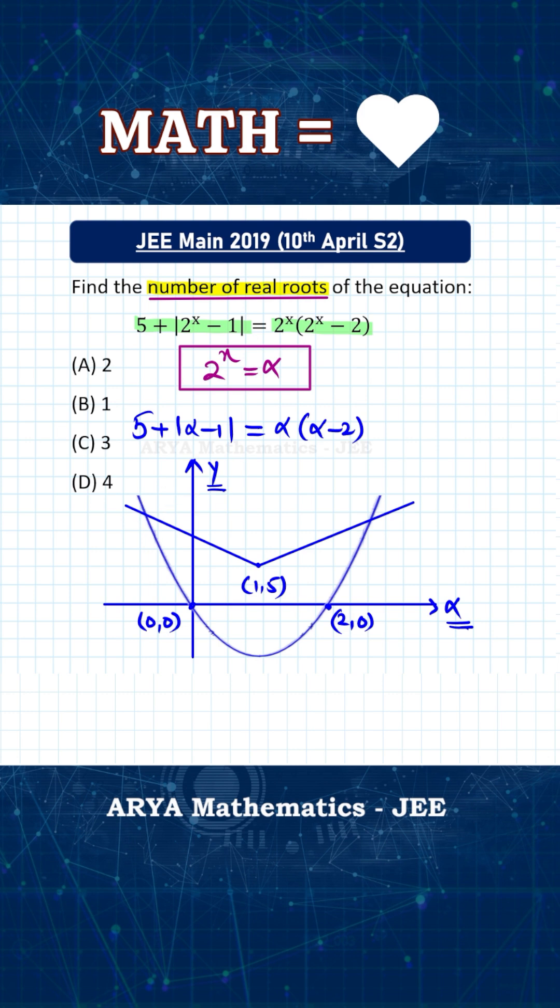And clearly, you can see that these two graphs are intersecting at two points. Let us call these two points A and B. So there are two points of intersection between these two curves. And therefore, for this second equation, for this equation in alpha, there must be two solutions.